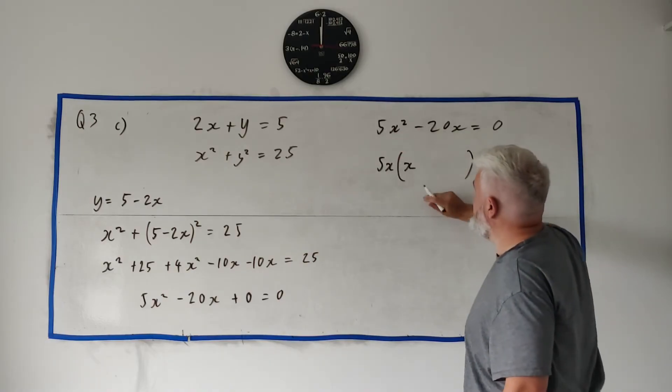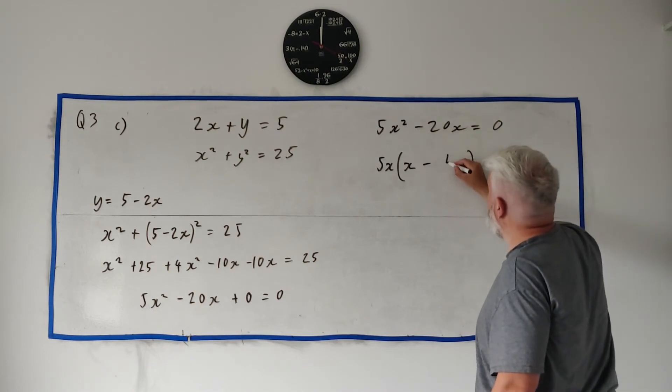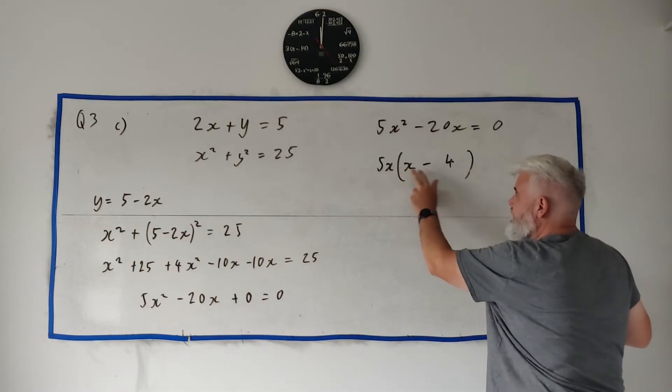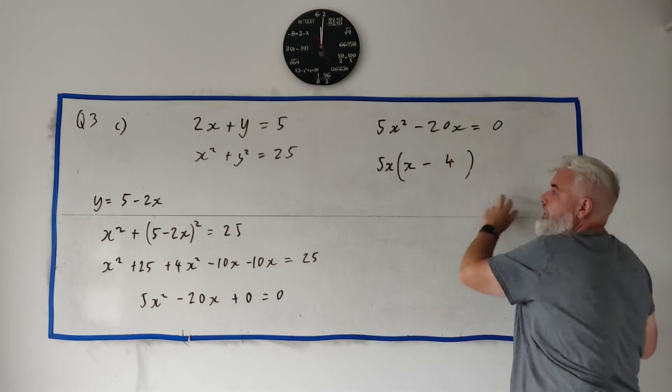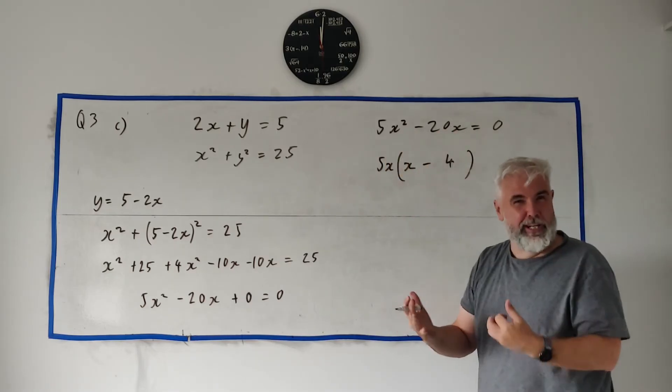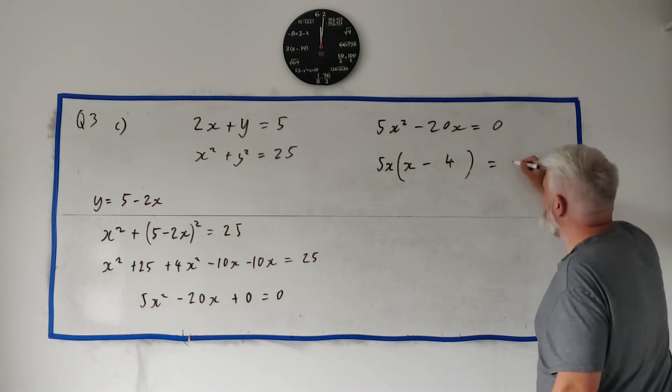If I take 5x out, what's left? Just an x. If I take 5x out of this, what's left? A minus 4. Remember, we're multiplying it back in. So 5x by minus 4 is minus 20. 5x by x is... So when I say take it out, I'm not really taking away. I'm dividing it out. And this equals 0.